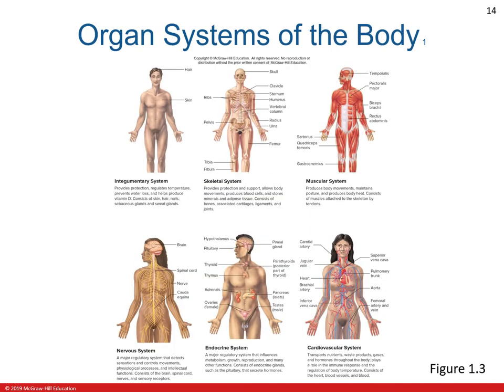There are 12 organ systems of the body. First would be the integumentary system, whose primary purpose is protection, but it also involves regulation of temperature, prevention of water loss, and production of vitamin D. Organs included in this system are the skin, hair, nails, sebaceous glands, and sweat glands.